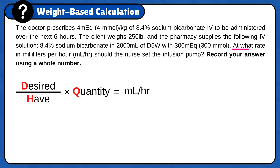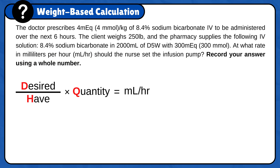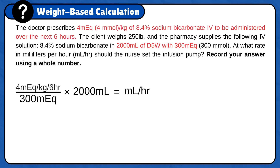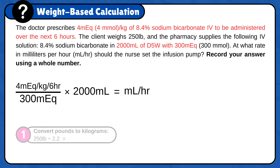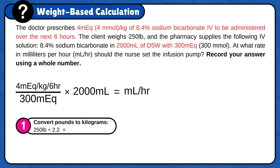Because the question is asking: at what rate in milliliters per hour should the nurse set the infusion pump? Now that the formula is ready, we need to plug in the numbers. Start with half and quantity, which is 2000 milliliters of D5W with 300 milliequivalent of sodium bicarbonate. For desired, plug in the doctor's order: 4 milliequivalent per kilogram over 6 hours. But you will notice we need to do some conversions. The patient's weight in pounds needs to be converted to kilograms. First, convert pounds to kilograms: 250 pounds divided by 2.2 is 113.63 kilograms.